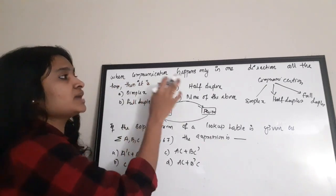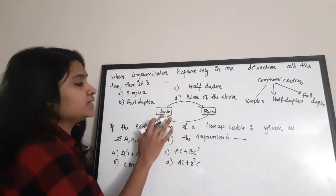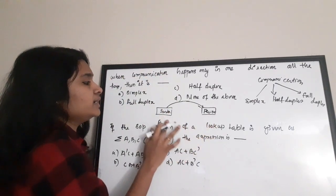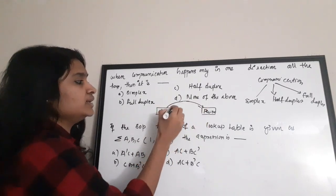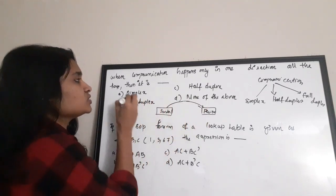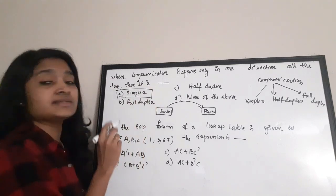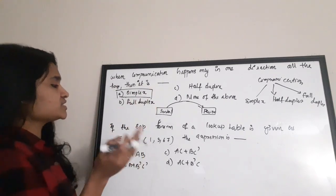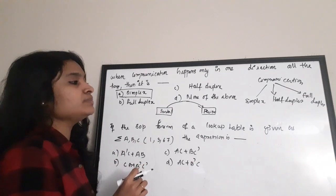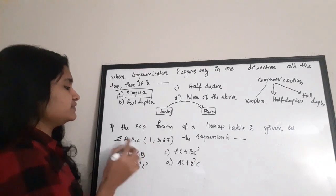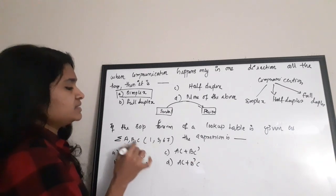So these are the three modes of communication. The question asks: when communication happens only in one direction all the time — that means the sender sends data to the receiver only. This is called simplex mode of communication. The correct answer is option A.